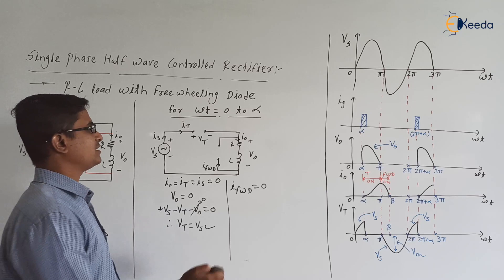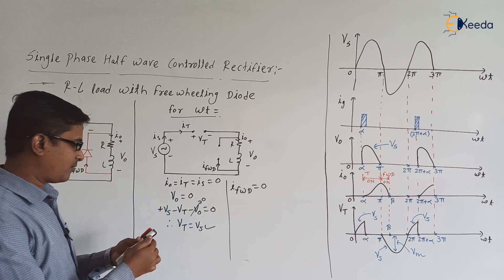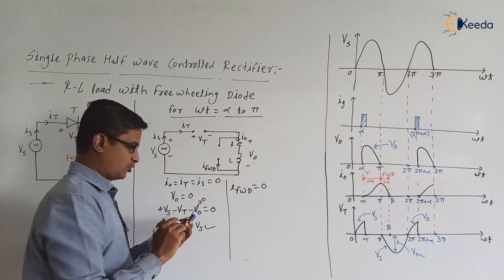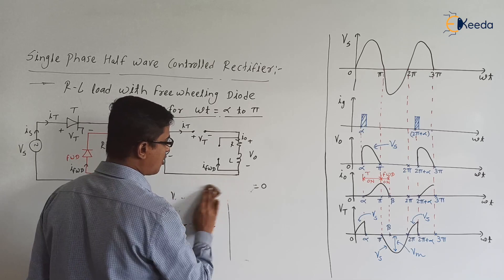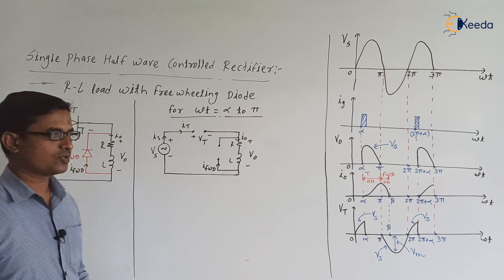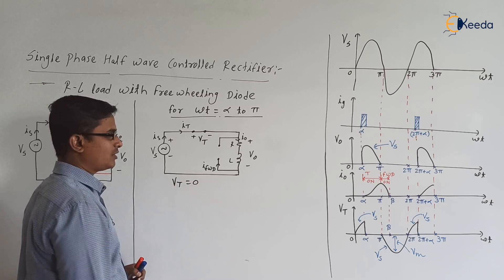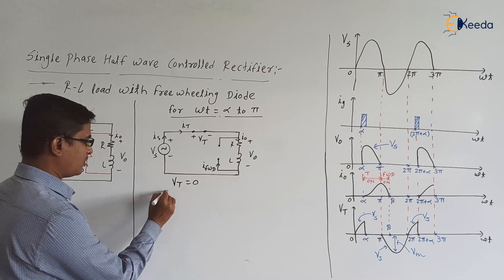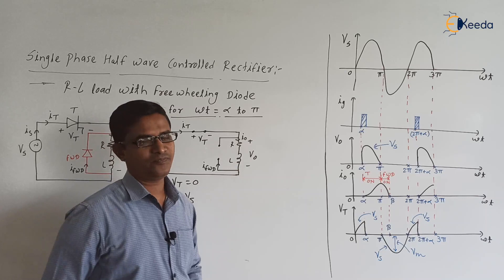At ωt = α, we apply the gate signal to the thyristor. So from α to π, the thyristor turns on and operates in forward conduction mode, acting as a short circuit. Therefore Vt = 0 V. Applying KVL, V0 becomes the same as the supply voltage.